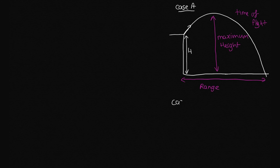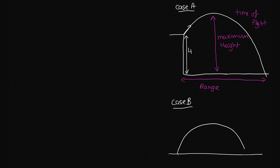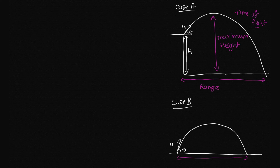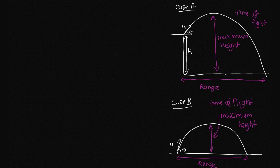Case B is more like the ball we were throwing before. We imagine throwing a ball up off the ground and it comes back down to the ground. It has some initial velocity U at some initial angle theta with the horizontal. For Case B, we also have a range, a maximum height, and a time of flight. These two cases are very similar — Case B is really just a special case of A, with H equal to zero.